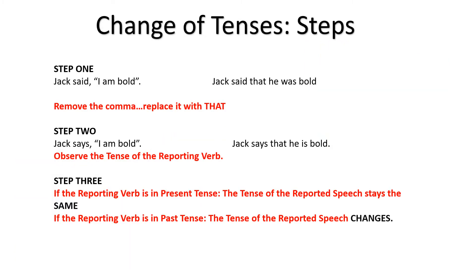Now let us talk about the three main steps while changing direct speech to indirect speech. Step 1: Remove the comma and replace it with 'that.' Step 2: Observe the tense of the reporting verb. Step 3: If the reporting verb is in present tense, the tense of your reported speech will stay as it is. However, if the reporting verb is in past tense, the tense of the reported speech changes.